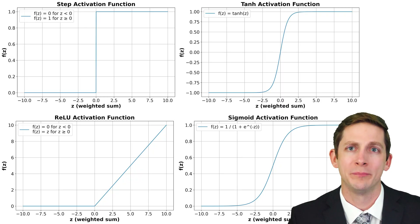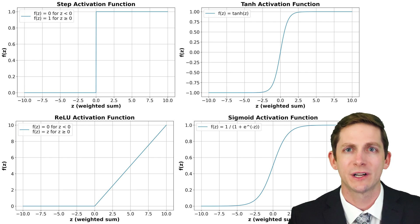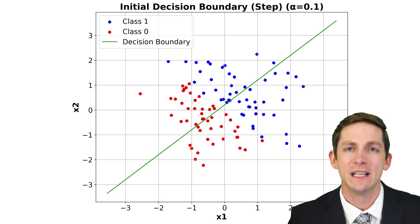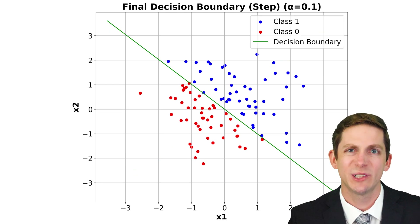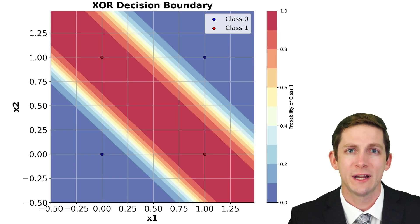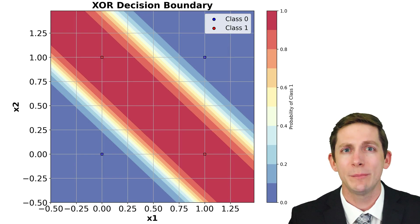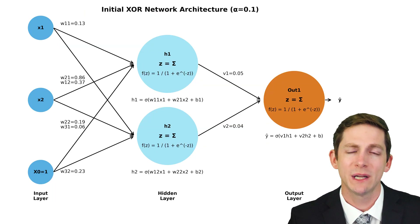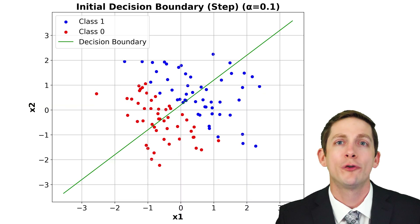Activation functions are important because they add a nonlinear component to what would otherwise be a linear combination. Even with an activation function, though, a single perceptron can only classify datasets that are linearly separable by a line, plane, or hyperplane. To create a curve or complex decision boundary, we will need a multilayered network, which we will discuss later in this video.